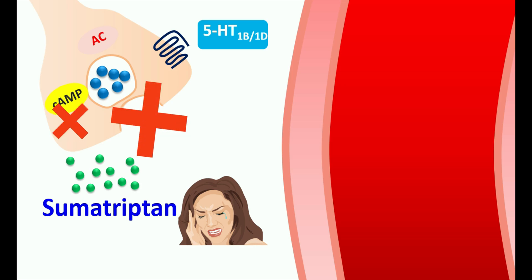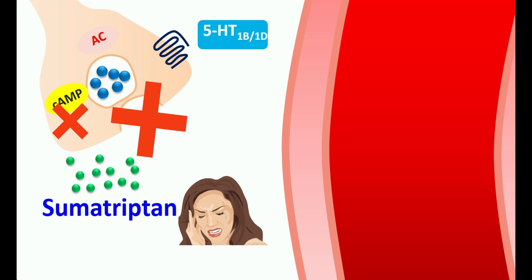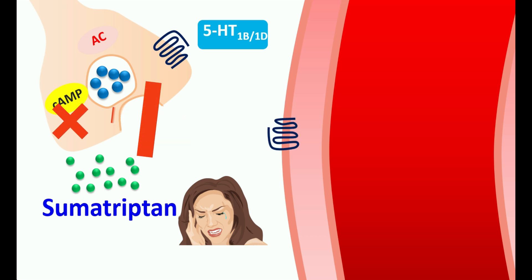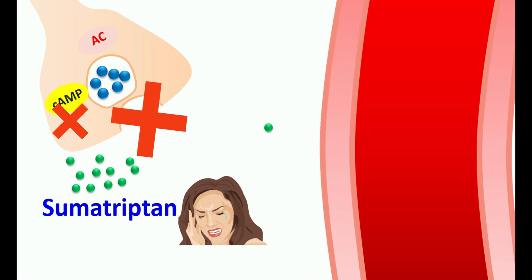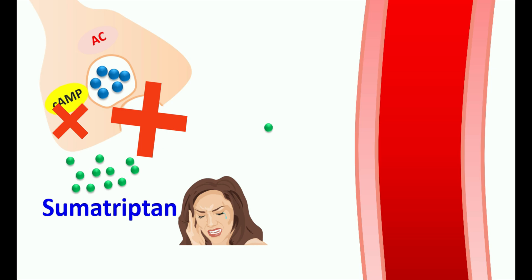This is one part of the action of sumatriptone in reducing the inflammation associated with migraine. Similarly, this medication can also directly act on the cranial blood vessels. These cranial blood vessels are expressed with 5ST1B or 1D receptors. Sumatriptone can directly activate these receptors, resulting in vasoconstriction. Because of this vasoconstriction, the symptoms of headache can be relieved with use of this medication.